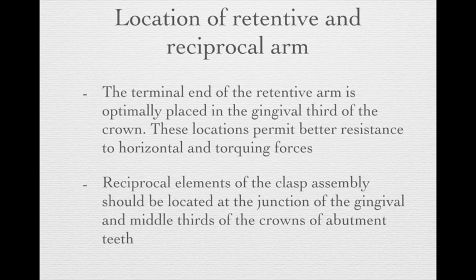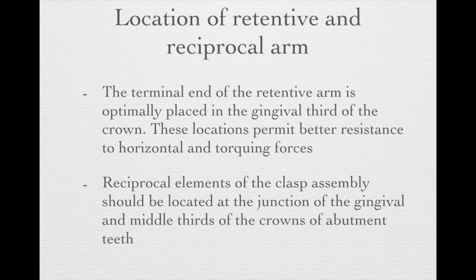Regarding the location of the retentive and reciprocal arms: when designing the retentive arm, the terminal end should be placed in the gingival third of the crown, because this location permits better resistance to horizontal and torquing forces. The reciprocal elements of the clasp should be located at the junction of the gingival and middle third of the tooth.